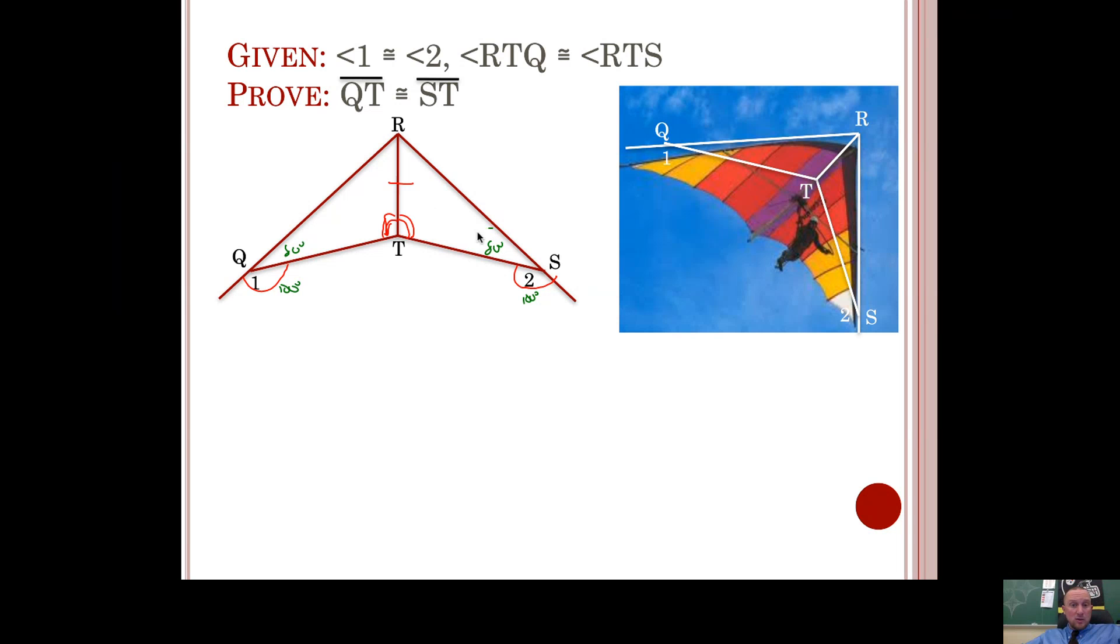So what you can then do is say that these angles are congruent. If you can argue that these angles are congruent, then your triangles are congruent by angle-angle-side. Then these two triangles are congruent by angle-angle-side, and if the triangles are congruent by angle-angle-side, then their corresponding parts are congruent too. So these segments would be congruent by CPCTC.